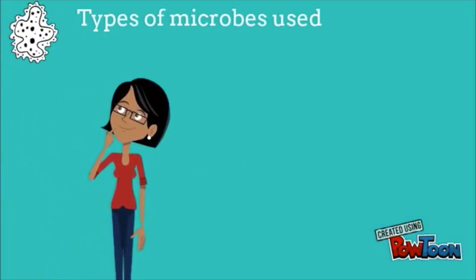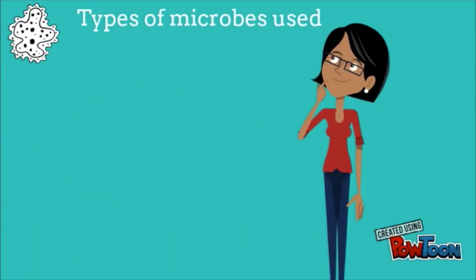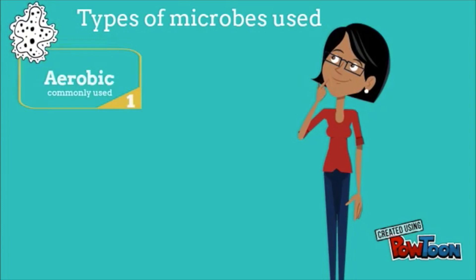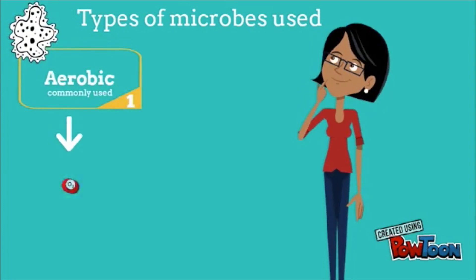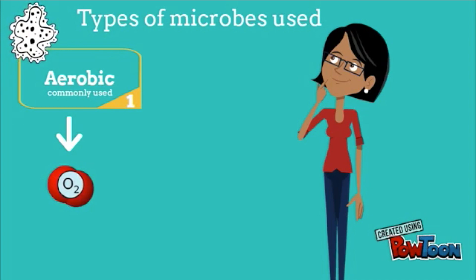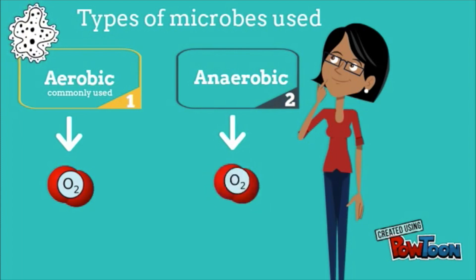There are two types of microbes used in bioremediation. First, the aerobic microbes, which are commonly used because they require oxygen to grow. Second, the anaerobic microbes, which grow without oxygen.